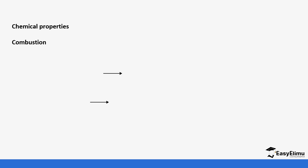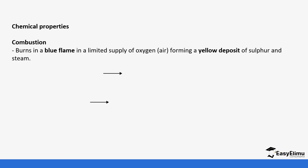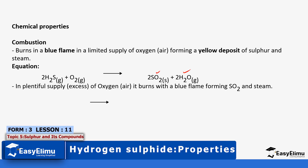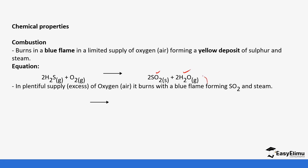One of the chemical properties is combustion. Hydrogen sulfide usually burns in a blue flame. In a limited supply of air, it forms yellow deposits of sulfur and steam. The hydrogen part of hydrogen sulfide reacts with oxygen to form water, and the sulfur part reacts with oxygen to form sulfur. The second equation is for the limited air case where sulfur is deposited.